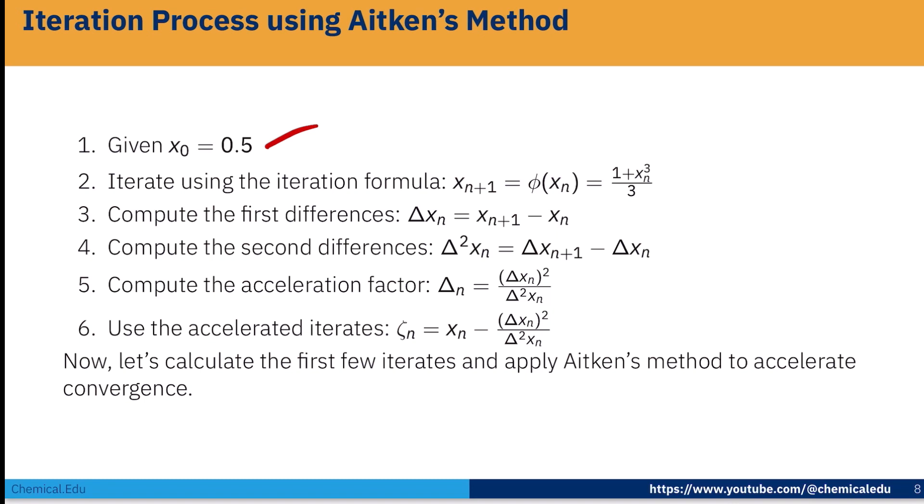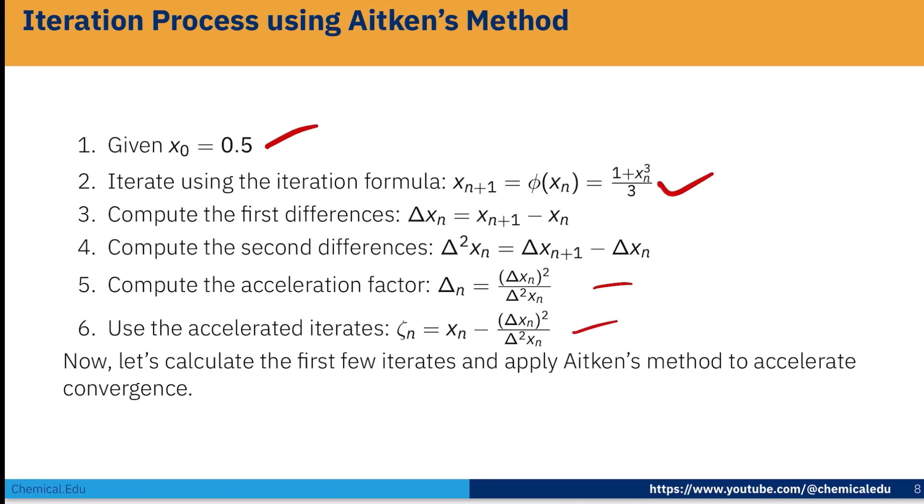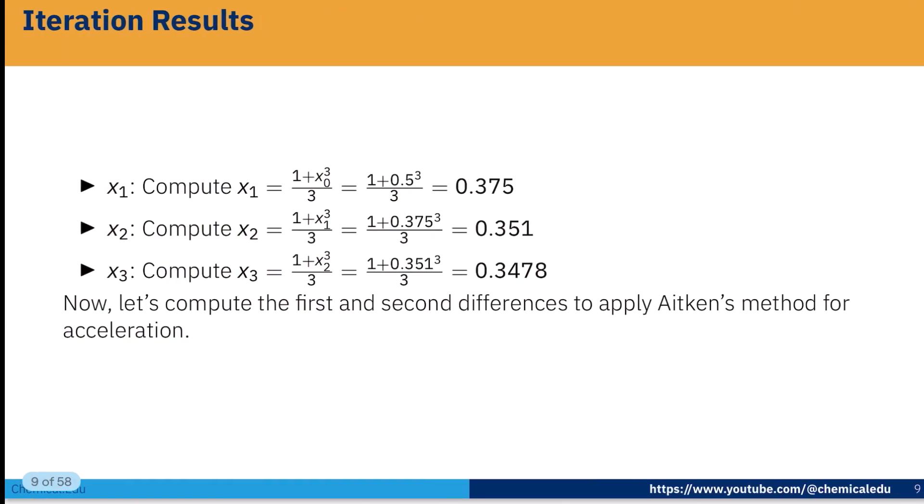Now compute the first difference I told you in that theory. So Δx_n is x_{n+1} - x_n and Δ²x_n is the second difference. This is same theory we talked about in earlier slides. Now we have to do the iteration. First compute x_1. Here is the formula. x_1, we use x_0 value. x_1 = (1 + x_0³)/3 = (1 + 0.5³)/3 = 0.375.